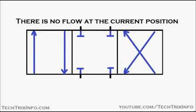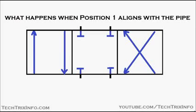Now let's see how this valve operates. At the current position — position two, the center — there is no flow because all the ports are in a blocked condition. You can see there is no flow happening, and the red color indicates it is getting pressurized because there is no flow.